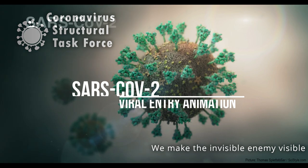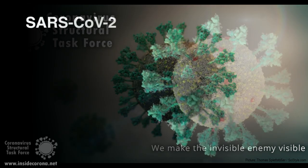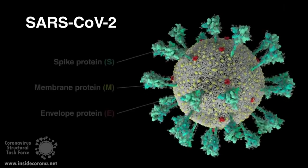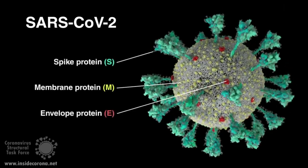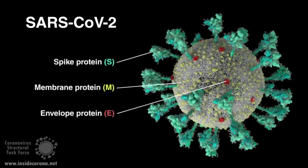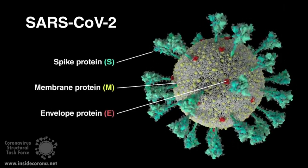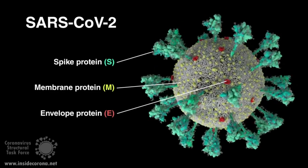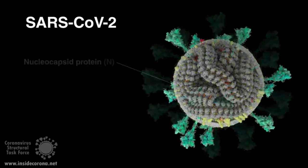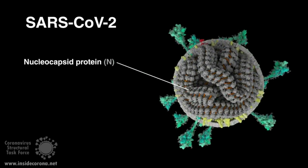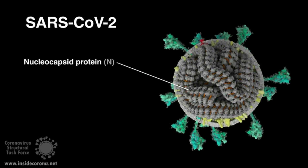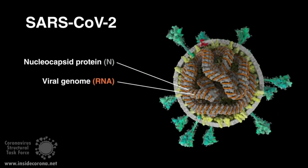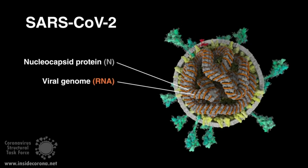SARS-CoV-2 is the virus responsible for COVID-19. The surface of the virus is studded with spike proteins colored teal, membrane proteins colored yellow, and envelope proteins colored red. A cross section shows the viral RNA genome in orange and the nucleocapsid protein, which protects the RNA, in gray.